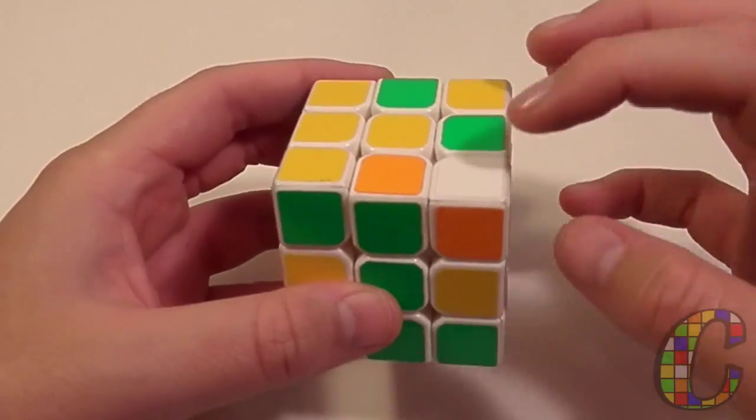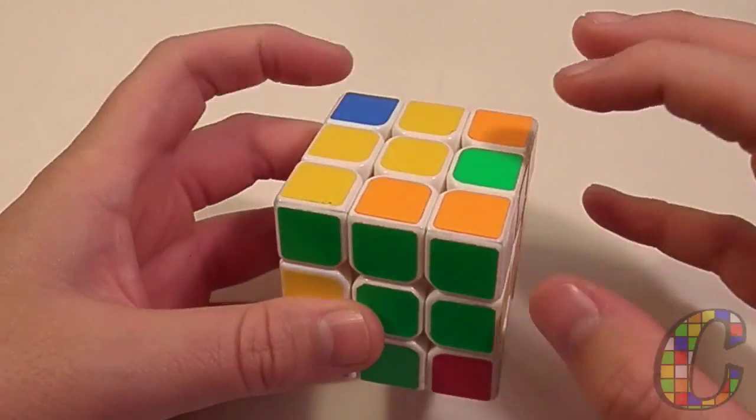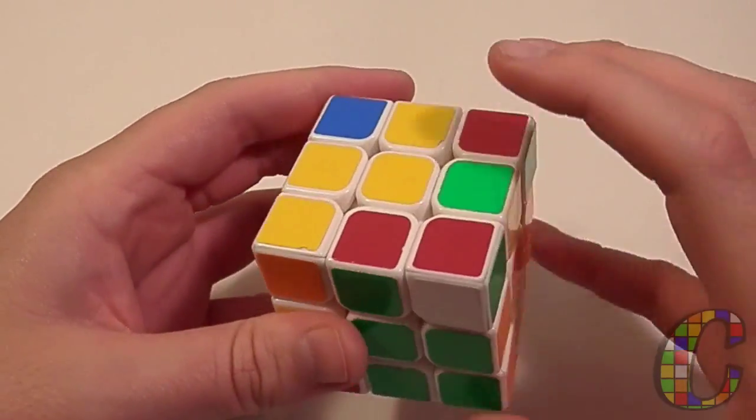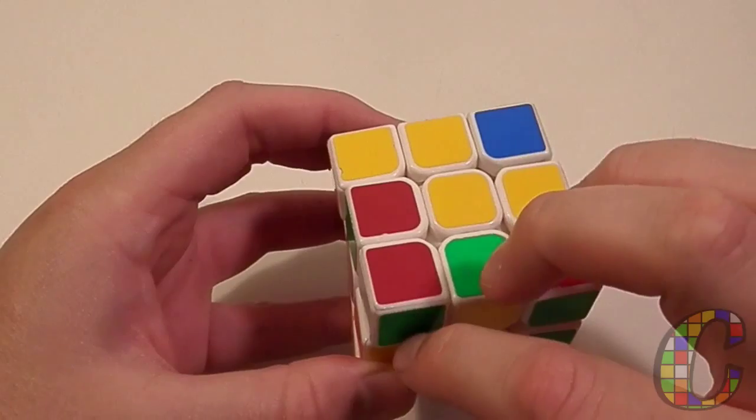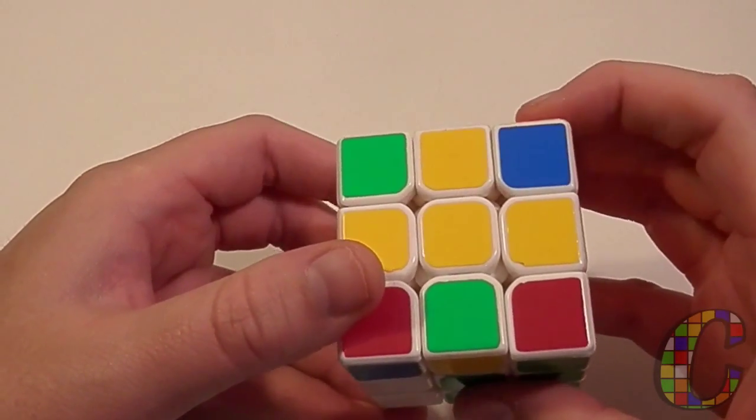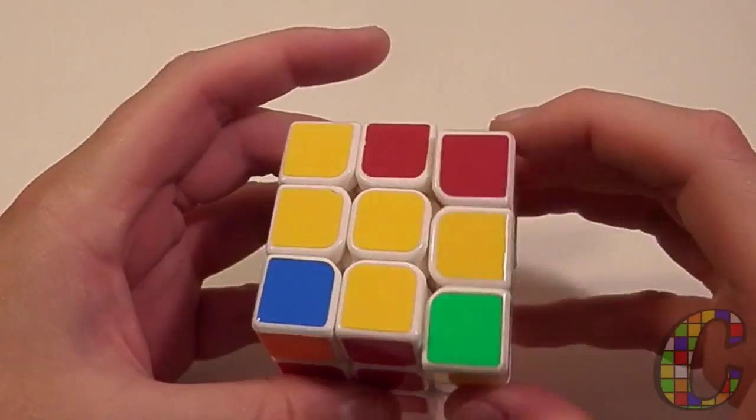Green and orange, you just do the sexy move twice. This is that same case we talked about. And then you could sledgehammer that in. And then this one, you've got to move this to the back. So you've got to put green on top, move it to the back and bring this. Then they're ready to be set up with that three move insert.